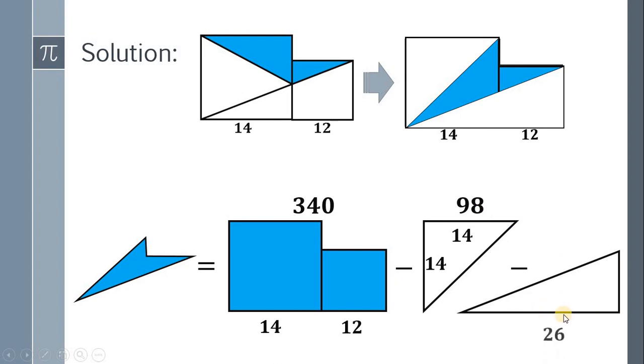Also, the base of this right triangle is 26 because 14 plus 12, and the height of this right triangle must be 12. So the area must be 1/2 multiplied by 12 times 26, or simply 156.